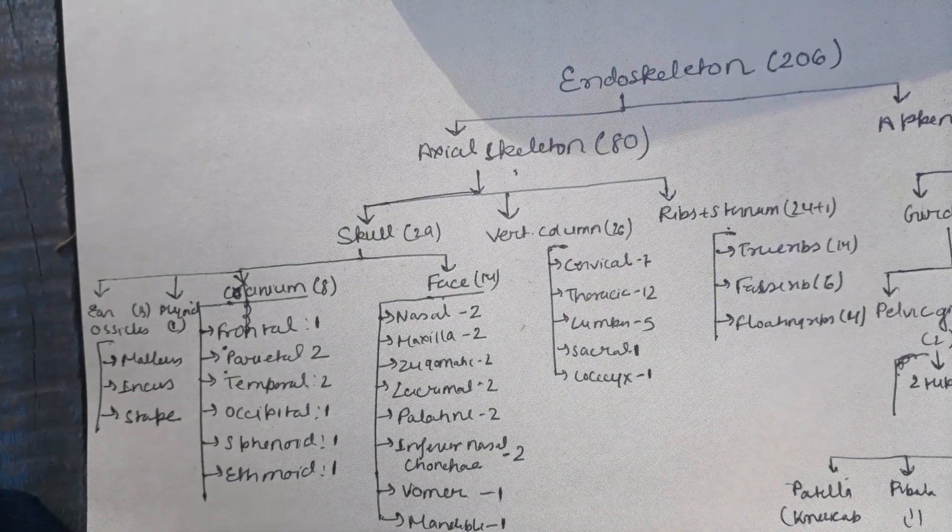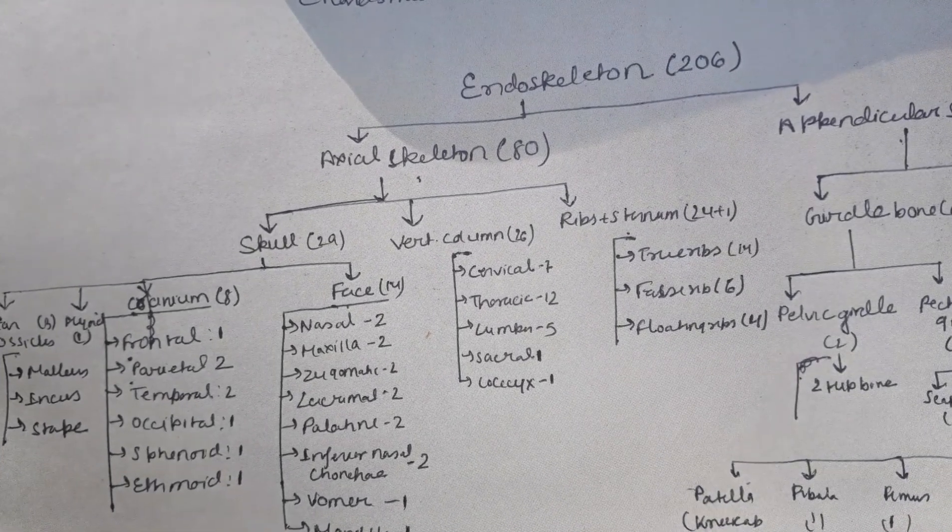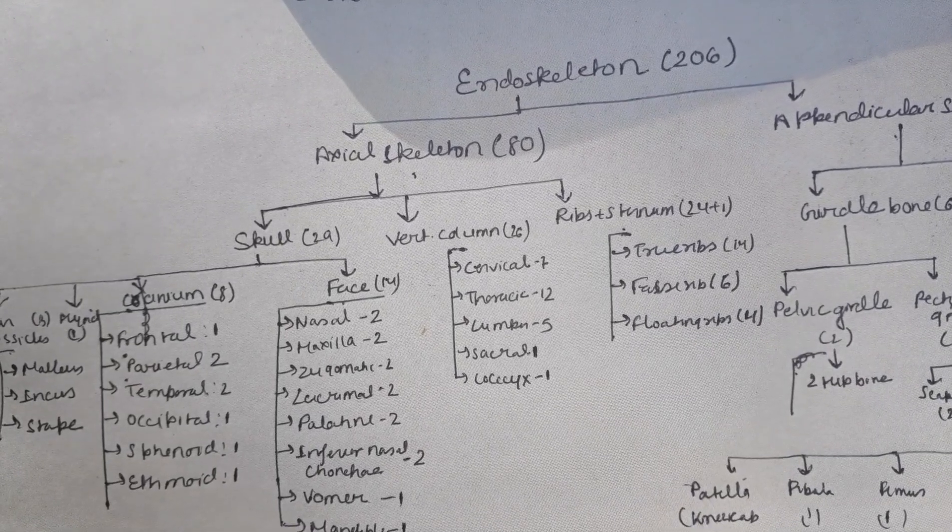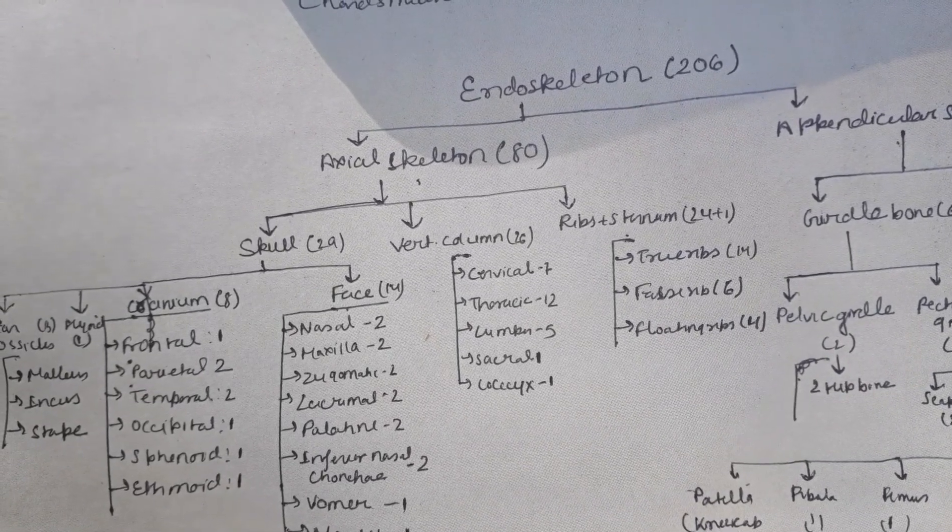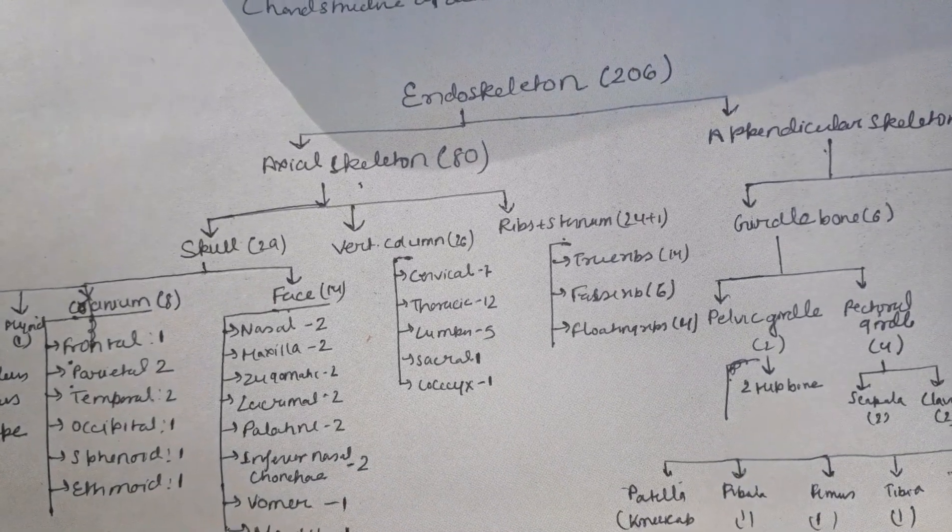Then vertebral column - they are 26, which consist of cervical 7, thoracic 12, lumbar 5, sacral 1, and coccygeal 1.